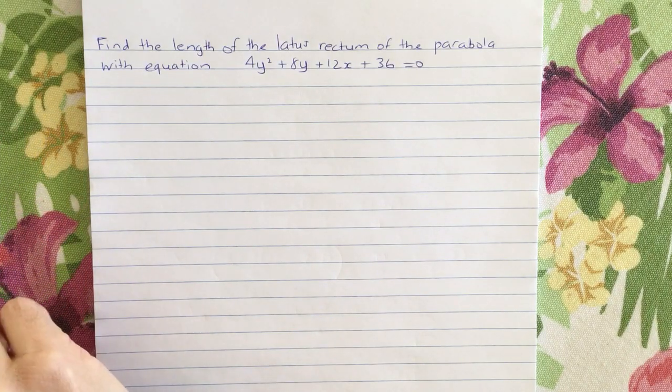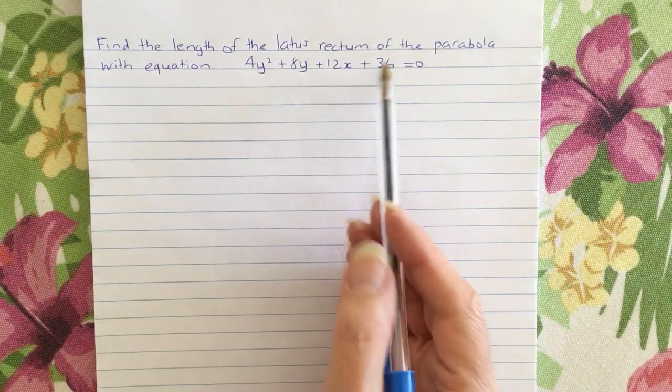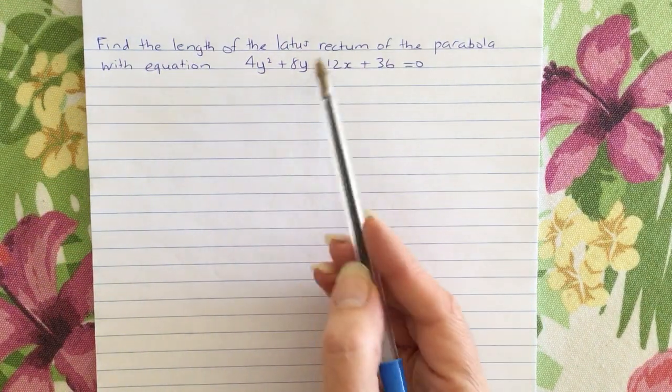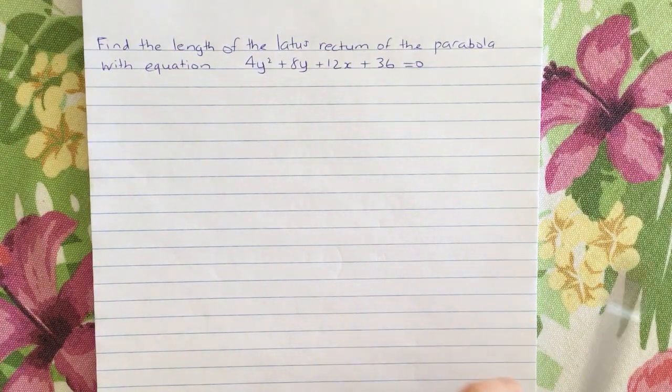Okay, a viewer has asked this question: find the length of the latus rectum of the parabola with equation 4y² + 8y + 12x + 36 = 0.